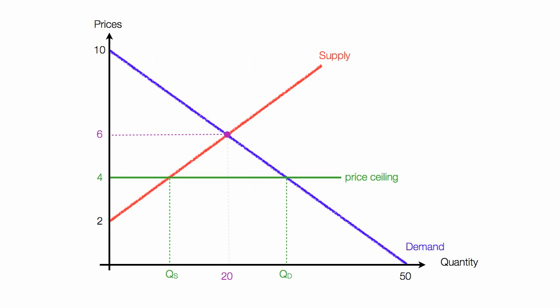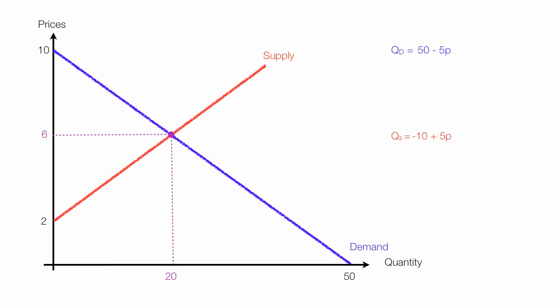Now imagine we have the following demand and supply curves. Blue is demand and red is supply. I impose a price floor of $9. I just take the $9 and put it right there for the price P.